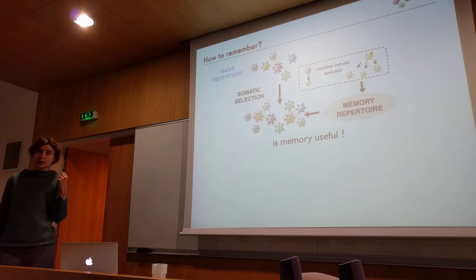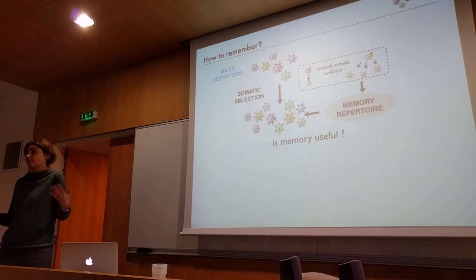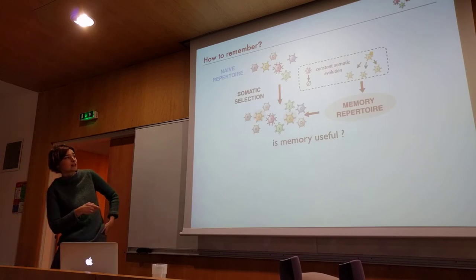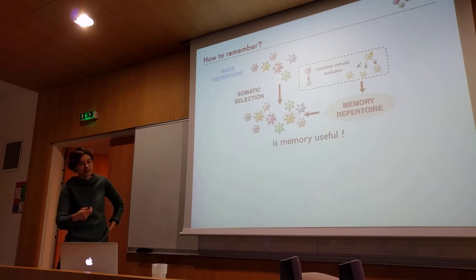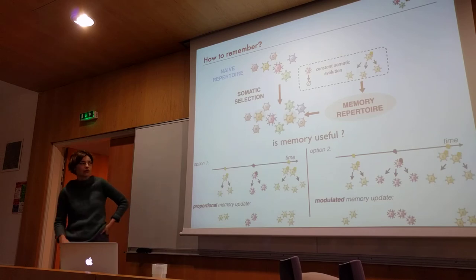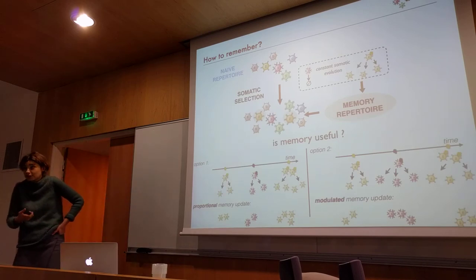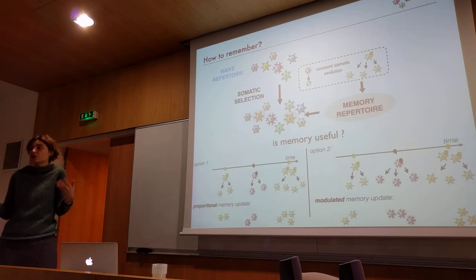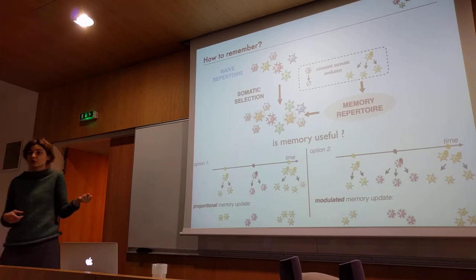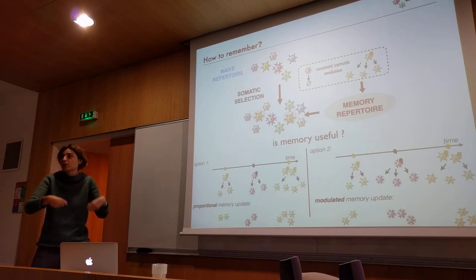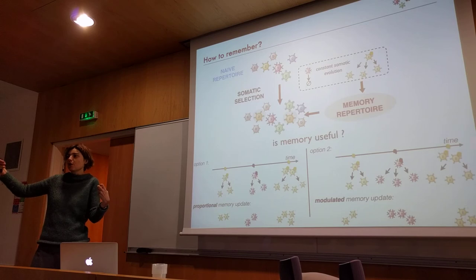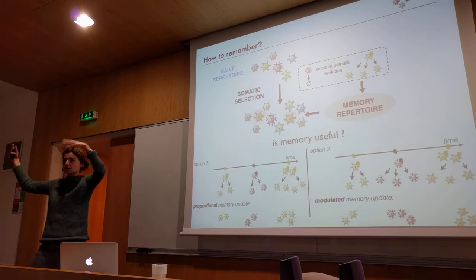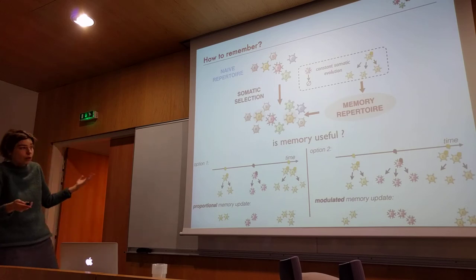To predict, you have to remember — and luckily the immune system has a memory repertoire. After an infection, some cells are flagged as having 'been to war' and placed in memory, so they respond more quickly upon re-exposure. You can ask: is memory useful for prediction? And if you have memory, what's the optimal way to update it — should it be a proportional update each time, or a modulated update where repeated exposures to the same pathogen update by less and less each time?